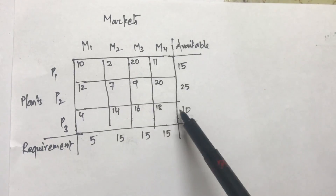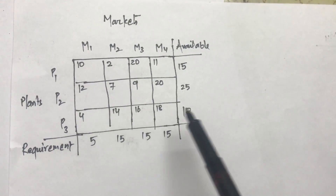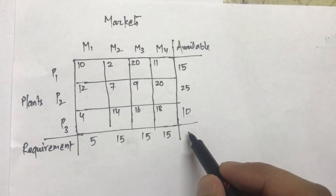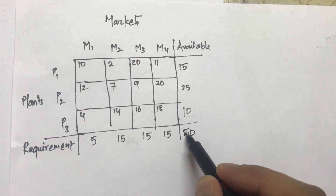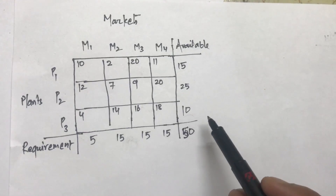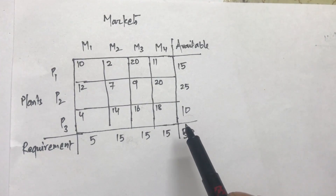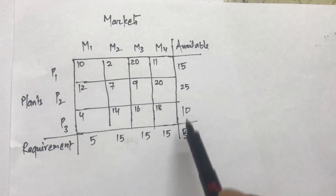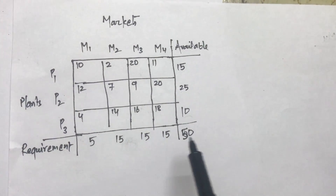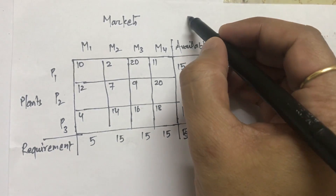These are the availabilities: plant P1 has 15 units, P2 has 25 units, and P3 has 10 units. The four markets have demands of 5, 15, 15, and 15, totaling 50 on both sides. Since demand equals availability, this is a balanced transportation problem. If they mismatched, we'd have an unbalanced problem and would need to convert it first. Since it's balanced, we can go straight ahead and solve it using Vogel's Approximation Method.